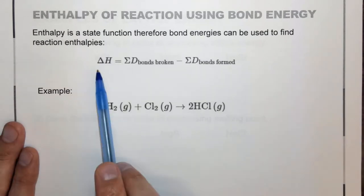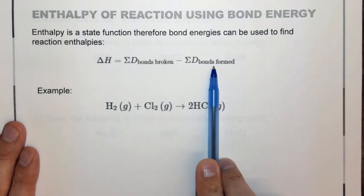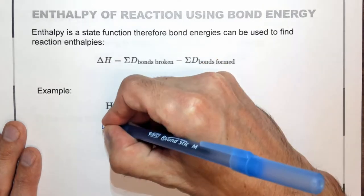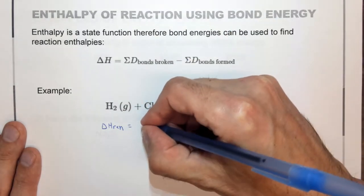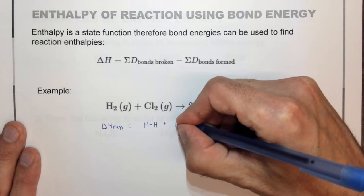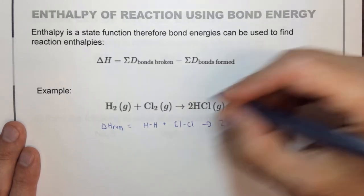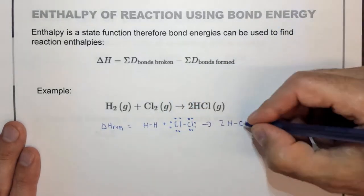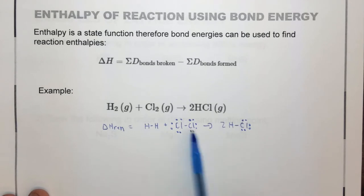The enthalpy of this reaction is going to be the summation of the bonds broken minus the bonds formed. So the enthalpy of this reaction is: we're going to break an H-H bond, we're going to break a Cl-Cl bond, and we're going to form two H-Cl bonds. We can put in the Lewis structures here with the dots. So we're going to break this bond, and we're going to break this bond, and we're going to form two of these bonds.